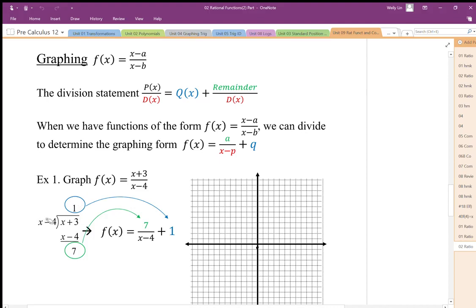I find the number of times that x minus 4 goes into x plus 3. That would be once. So 1 times x minus 4 gives me the x minus 4 here. And I subtract these two terms, I end up with positive 7. So plus 3 minus negative 4 gives me 7. That 7 is my remainder because this expression cannot fit into that 7.